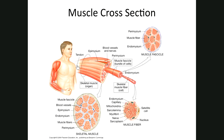Satellite cells are dormant stem cells found in association with skeletal muscles. They can fuse with each other to form new muscle cells, since stem cells can become any cell type. During embryological development, cells called myoblasts (M-Y-O-B-L-A-S-T — blast means builder, myo means muscle) fuse together to form muscle cells.